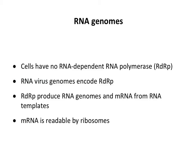RNA genomes are interesting because the cell can't copy them. The cell doesn't have enzymes that can replicate RNA genomes. It can make small RNAs, like interfering RNAs, but it cannot copy long RNA genomes. So all virus genomes encode their own RNA-dependent RNA polymerase—abbreviated RDRP. These enzymes make new genomes from RNA genomes and also make mRNAs.